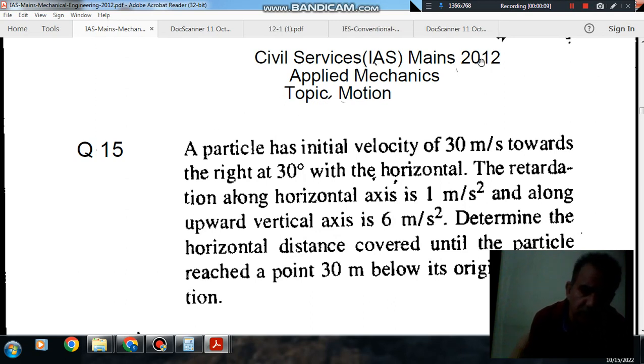Question number 15 from Civil Services IAS Mains 2012 is: a particle has initial velocity of 30 m per second towards the right at 30 degrees with the horizontal. The retardation along horizontal axis is 1 m per second squared and along upward vertical axis is 6 m per second squared. Determine the horizontal distance covered until the particle reaches a point 30 m below its original elevation.